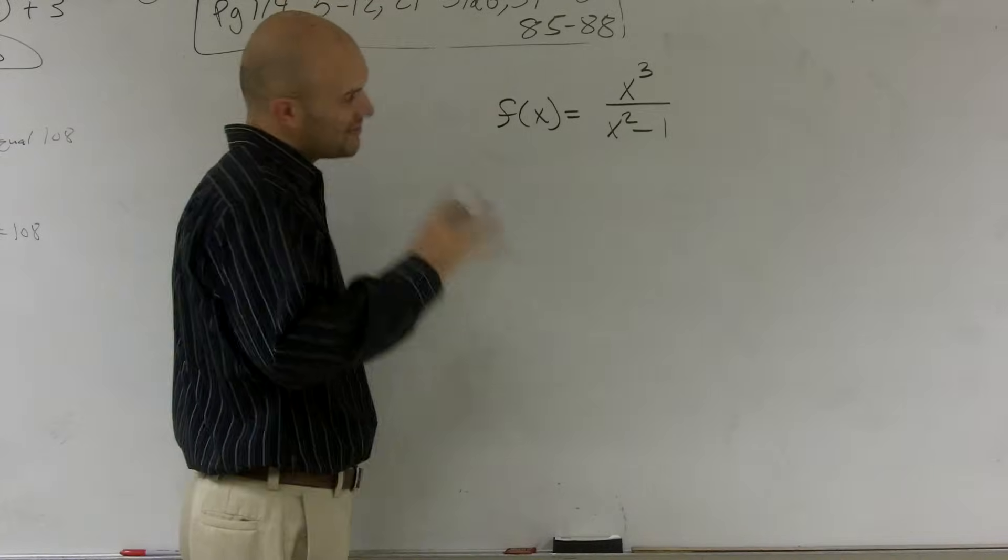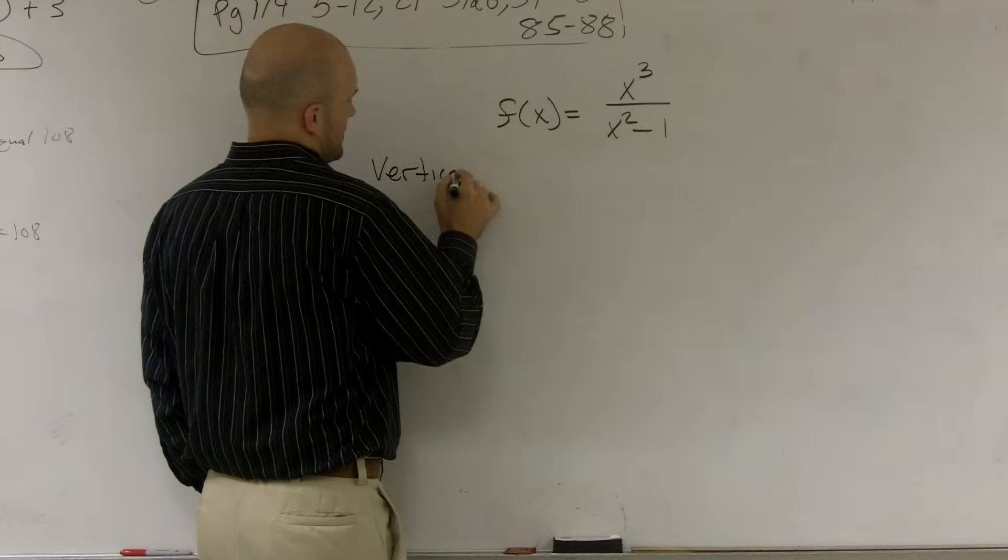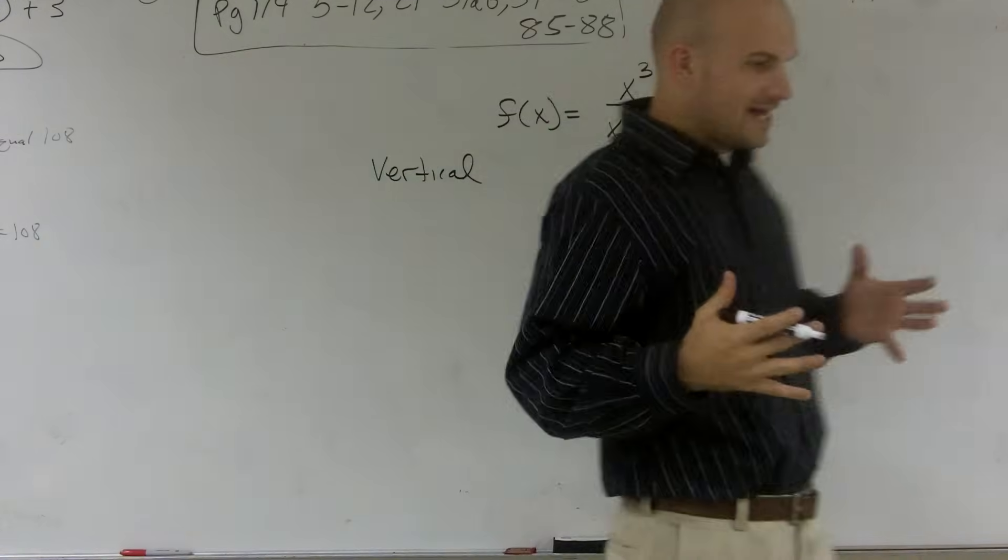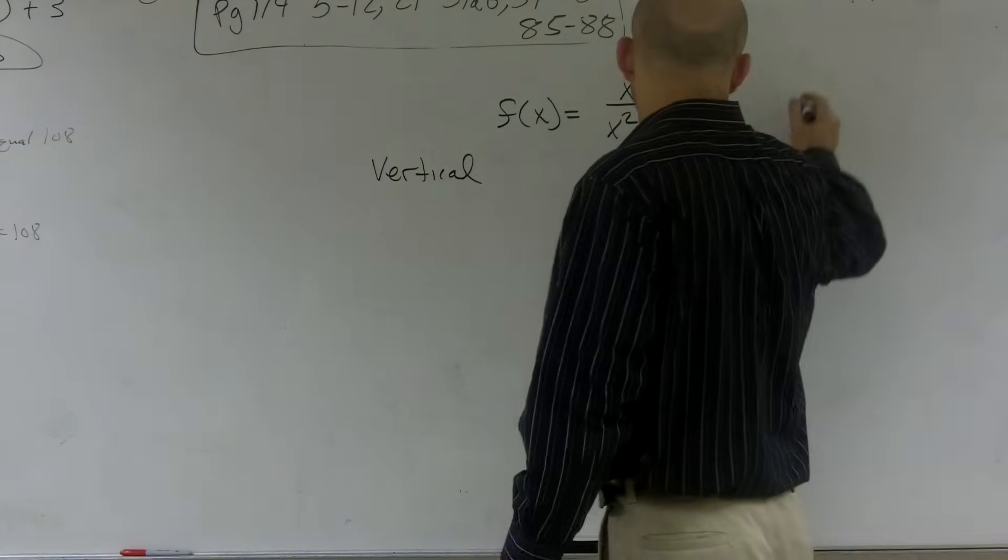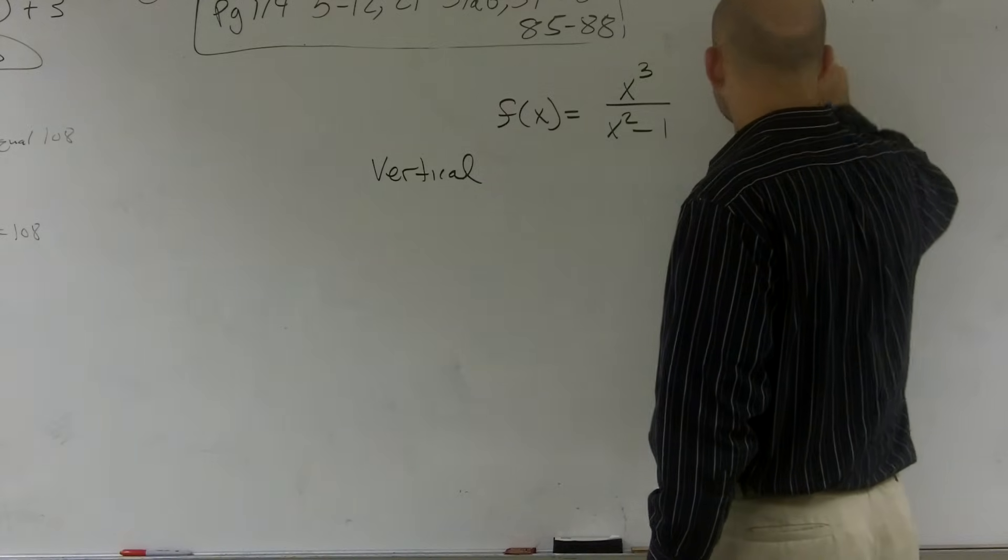OK. So the first thing, I like to start with the vertical. And when finding the vertical asymptotes, what we need to do is we need to find out what values are not going to be true for x, right? Because vertical, if you're going to think of like my graph here, vertical are going to be vertical lines.